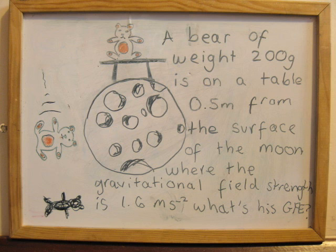Here is an example of a problem that you may be faced with. A bear of weight 200 grams is placed on a table 0.5 meters from the surface of the Moon, where the gravitational field strength is 1.6 meters per second squared. What is its gravitational potential energy?